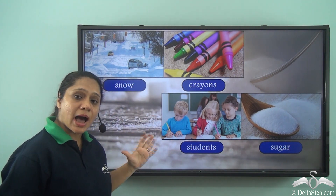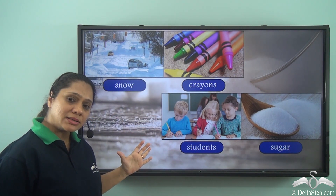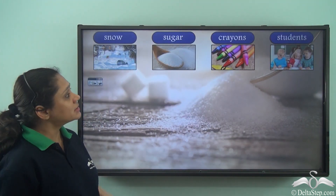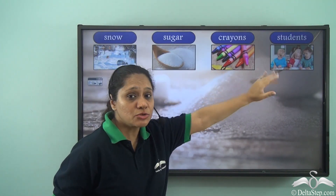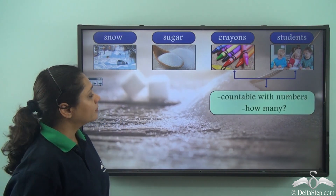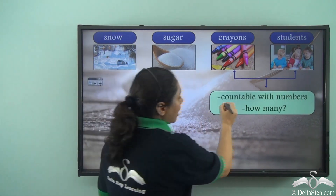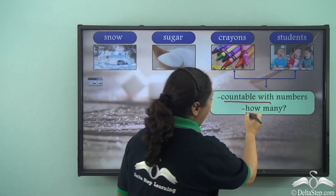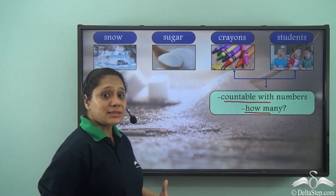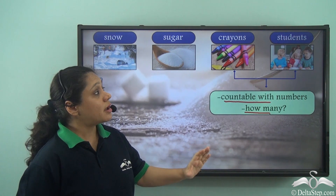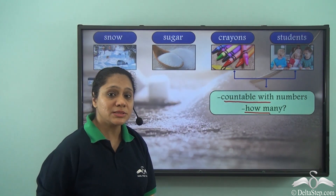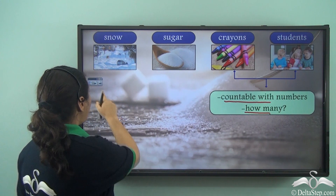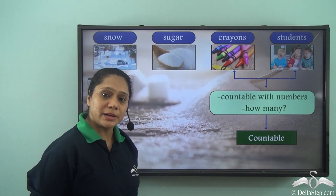All these words are naming words and are nouns. But among all these nouns, crayons and students can be counted with numbers. They answer the question 'how many.' We can say how many crayons, how many students. Hence crayons and students are countable nouns.